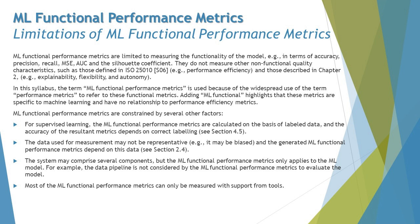ML functional performance matrices are constrained by several other factors. For example, in supervised learning, the ML functional performance matrices are calculated on the basis of labeled data, and the accuracy of the resultant matrix depends on correct labeling. The data used for measurement may not be representative — it may be biased at times — and the generated ML functional performance matrix depends on this data.